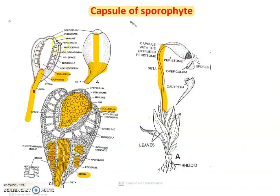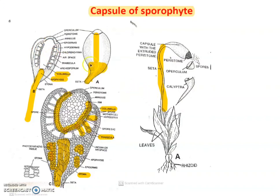Columella is surrounded by spore-bearing region where spore mother cells are present. Spores develop on the side of the columella. The columella and apophysis are connected by trabecular cells. There are air chambers present, which are connected to the apophysis. The outermost layer is called as epidermis, and below that epidermis there is hypodermis.